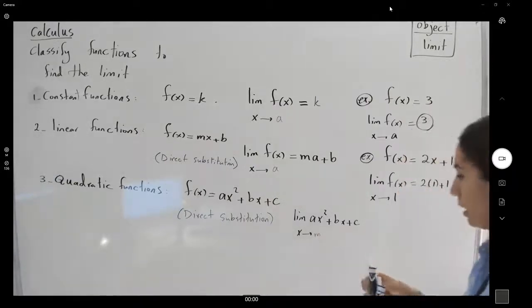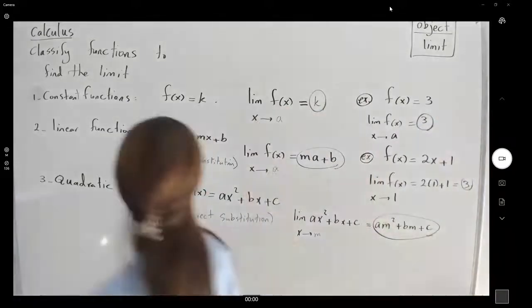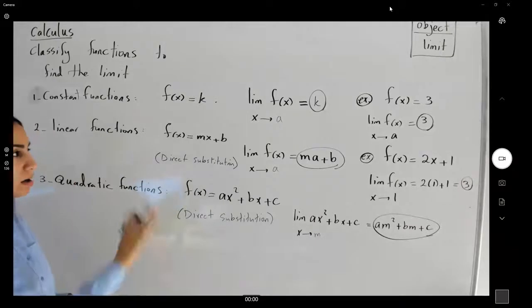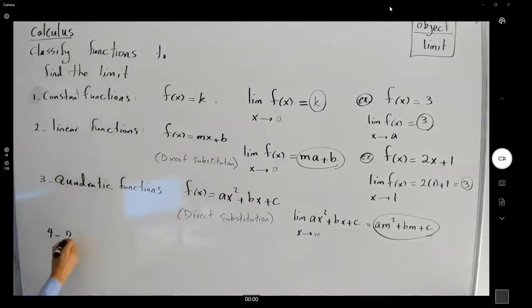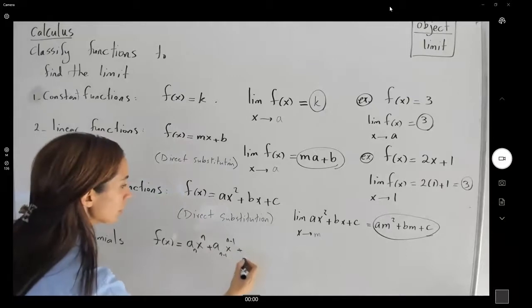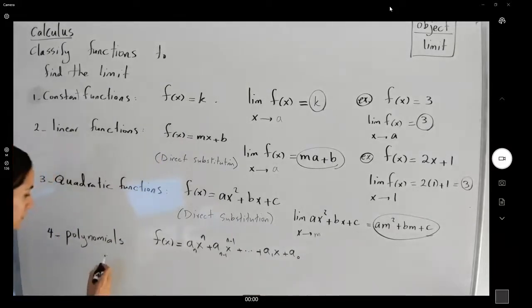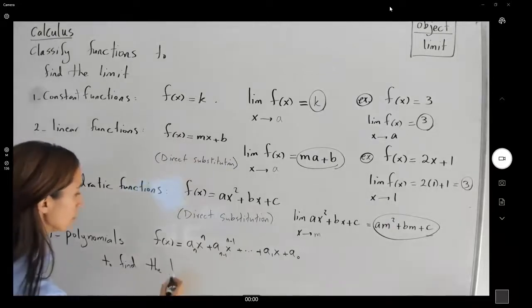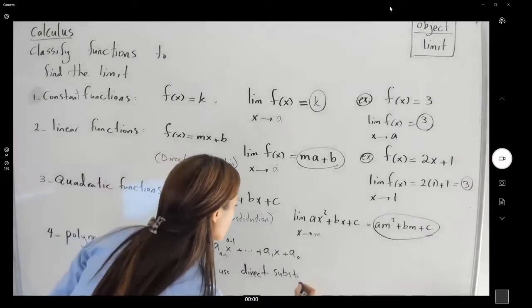Using direct substitution, the limit of ax squared plus bx plus c as x approaches some number m equals a·m squared plus b·m plus c. As you can see, all of these functions — constant, linear, quadratic — are examples of polynomial functions. In general, if we have a polynomial f of x equals aₙxⁿ plus aₙ₋₁xⁿ⁻¹ plus … plus a₁x plus a₀, to find the limit we use direct substitution.